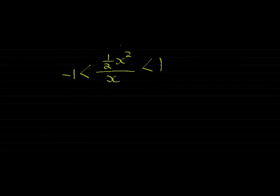So a half x squared divided by x. The x divides into itself once and into x squared it goes once and leaves an x behind. So there's two factors of x in the numerator which counts as one in the denominator. So I get that a half x must be less than 1 and bigger than negative 1.